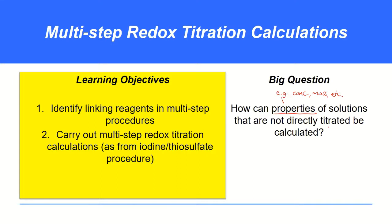In a typical one-step titration calculation, the substance you're analysing is directly titrated against another compound — it might be an acid with a base or something like that. But here we've got situations where the substance you're analysing is not directly involved in the titration. This is typically from an iodine-thiosulfate titration procedure, but it doesn't have to be, which is why I've called it multi-step redox titration calculations — you might get questions about different types of procedures with the same idea.